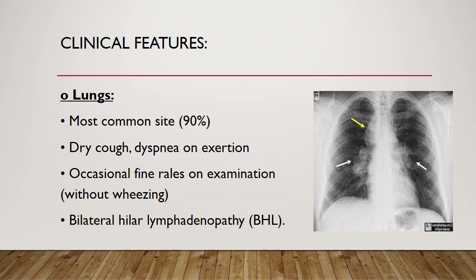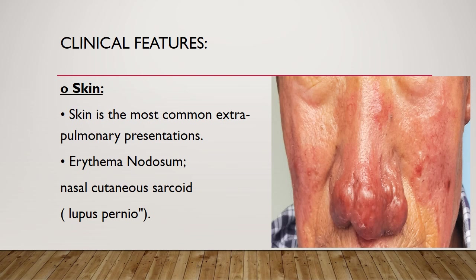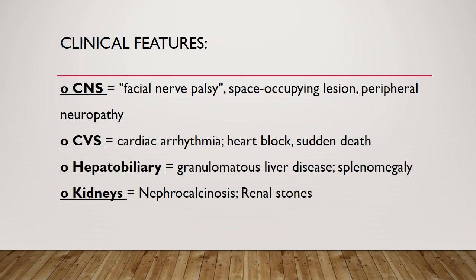Skin is the most common extra-pulmonary presentation. There will be erythema nodosum — reddish circular macules present on the shins of the legs — and there will be nasal cutaneous sarcoid, which is known as lupus pernio, as shown in the picture.